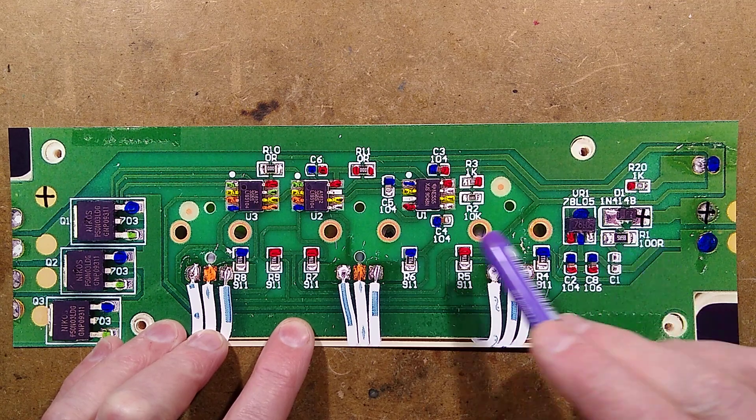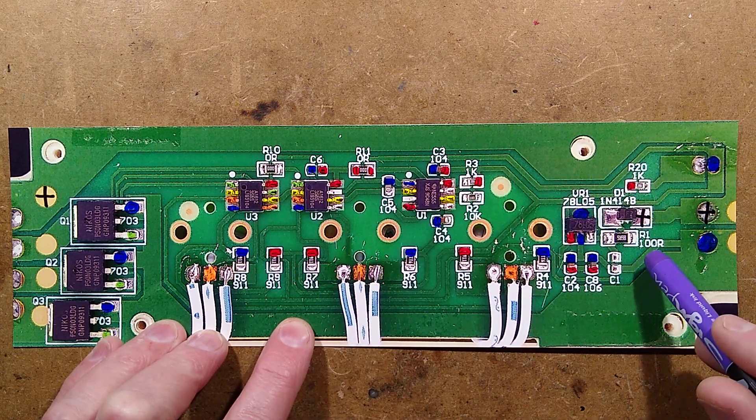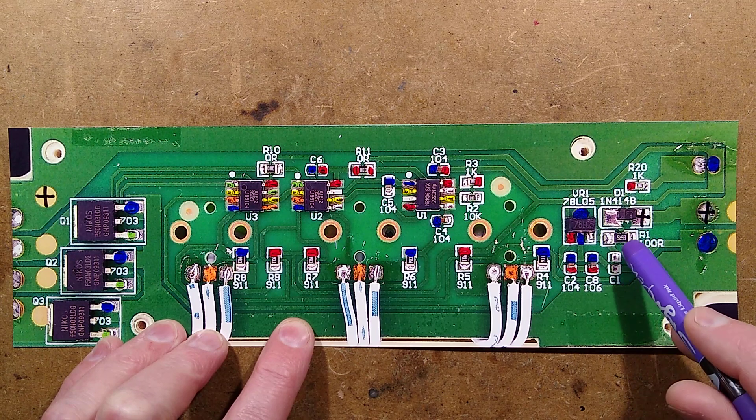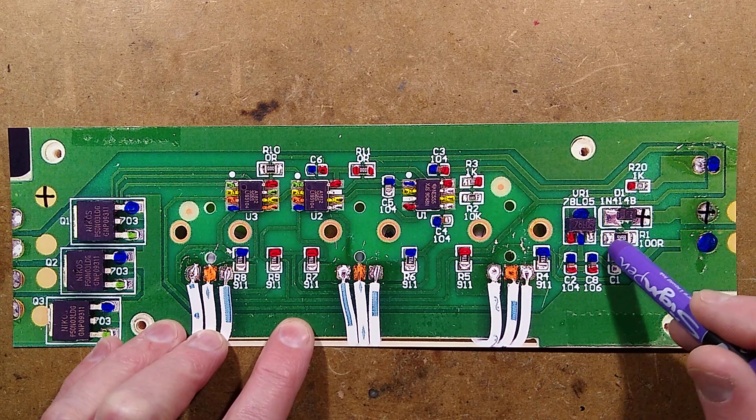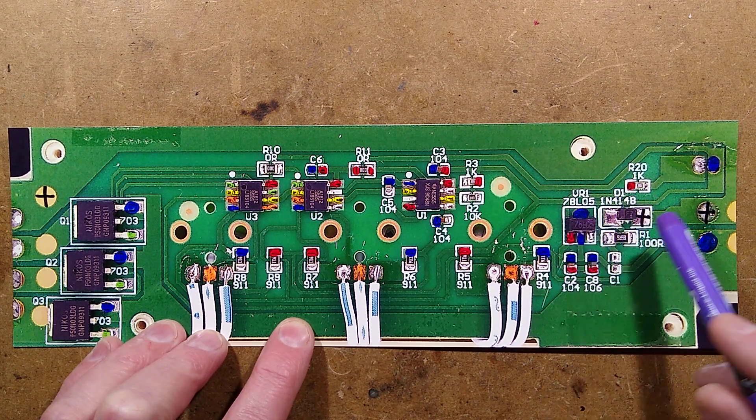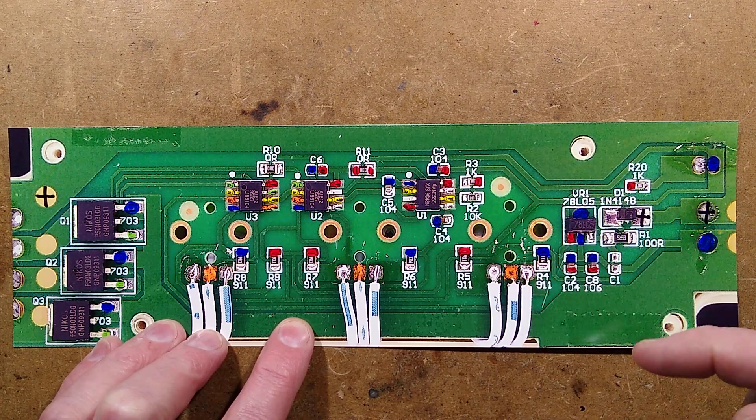It's marked as a 100 ohm resistor. All the components are marked on the board which is nice but this one they've swapped out for a different value. They've got a missing capacitor here in the sort of pre-regulation side.